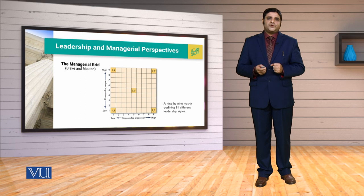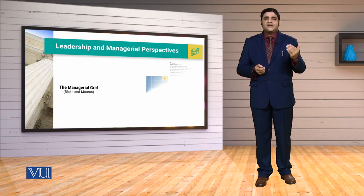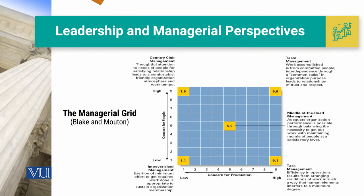These areas in the matrix are given different names with descriptions. One-one is called improvised management — concern for production is low, concern for people is low, and people are mostly left on their own to decide their work patterns, schedules, and to achieve organizational goals. In contrast, nine-nine refers to team management, where both concern for production and concern for people are at maximum. One-nine means concern for production is least while concern for people is maximum, and this management style is called country club management.